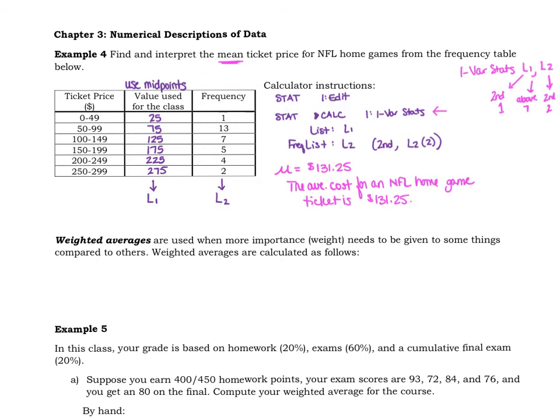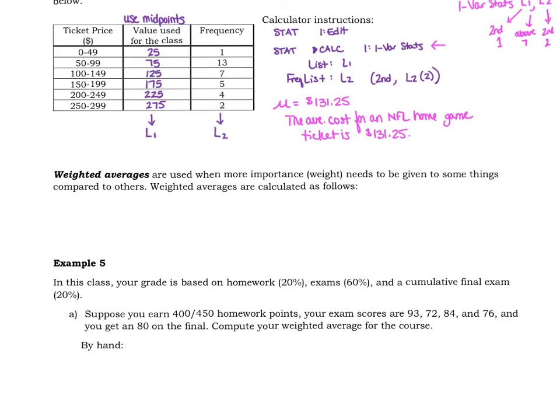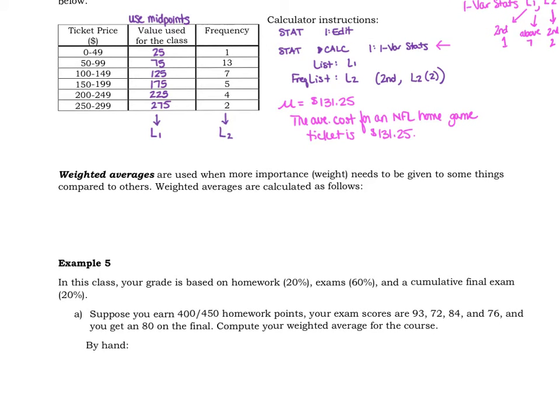All right, now let's talk about weighted averages for a second, which is actually what we just did. Weighted averages are used when more importance or weight needs to be given to something compared to others. And so we did that like in the table above, we needed to give more weight to the $75 price point because there were 13 teams that had that price point. We had to give it more weight. We had to give less weight to the 0 to 49 because there's only one team there, so we only counted that value once.